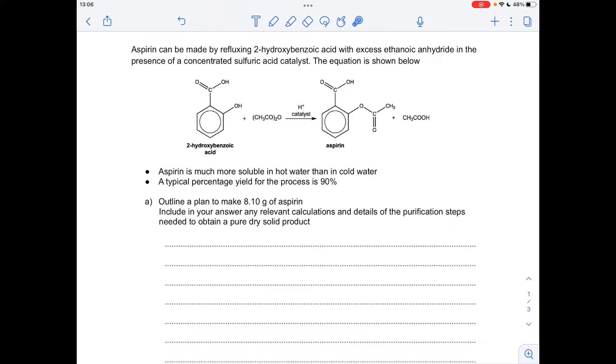The first thing I'll do is the calculation. We're going to work out how many grams of 2-hydroxybenzoic acid we'll need to make 8.1 grams of aspirin, factoring in that percentage yield, and then we'll look at the purification to end up with a pure dry solid product.